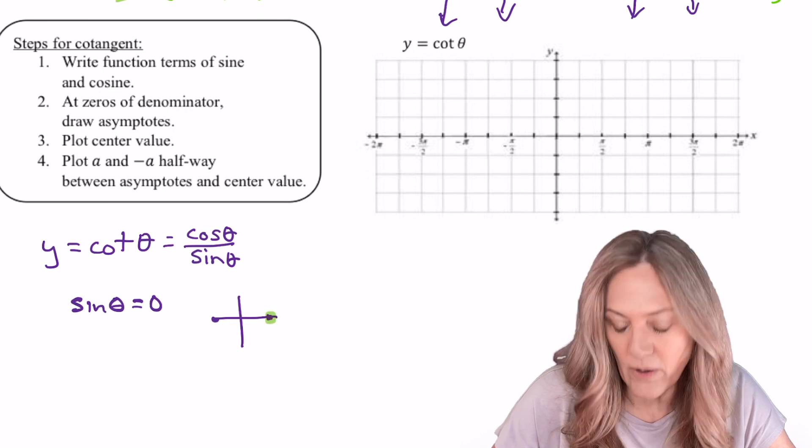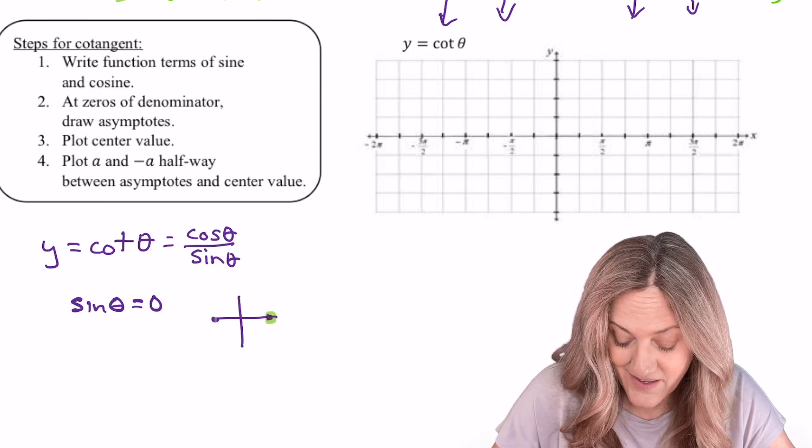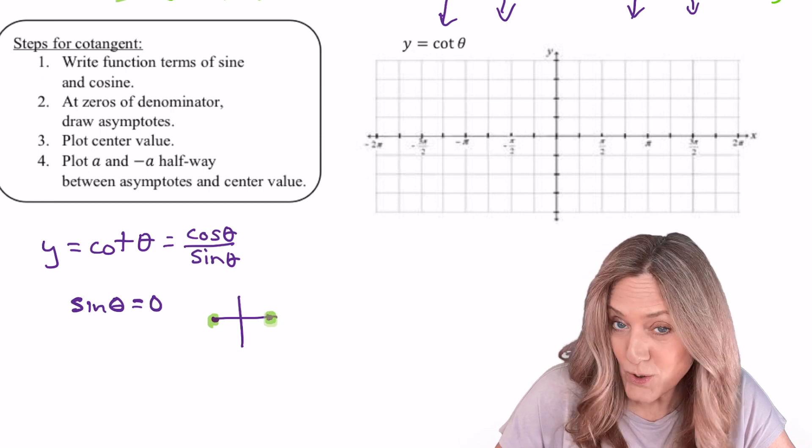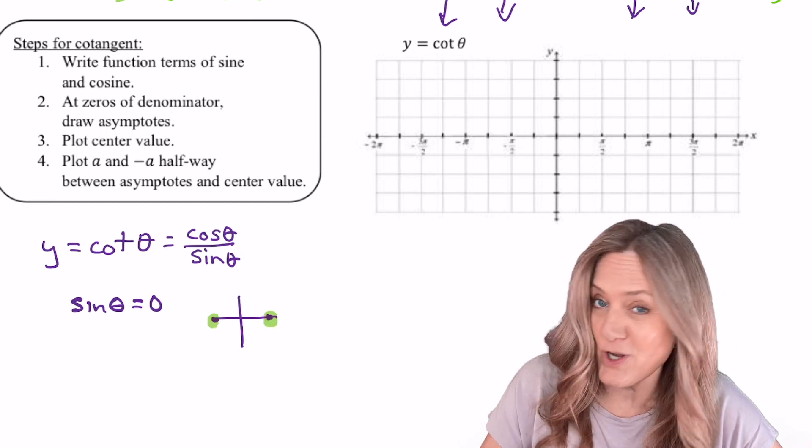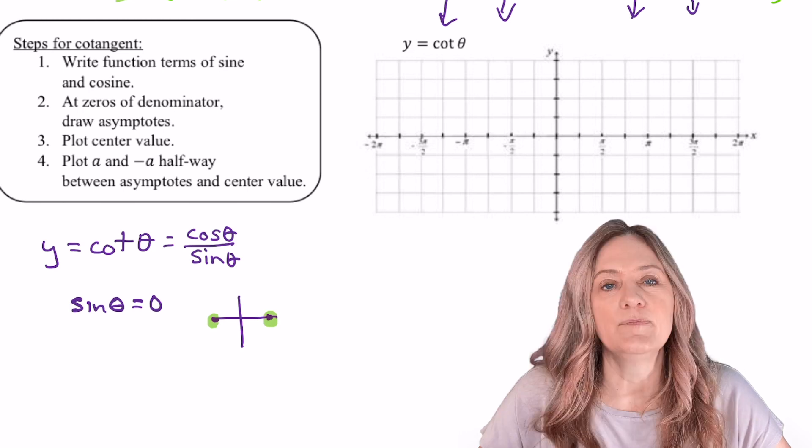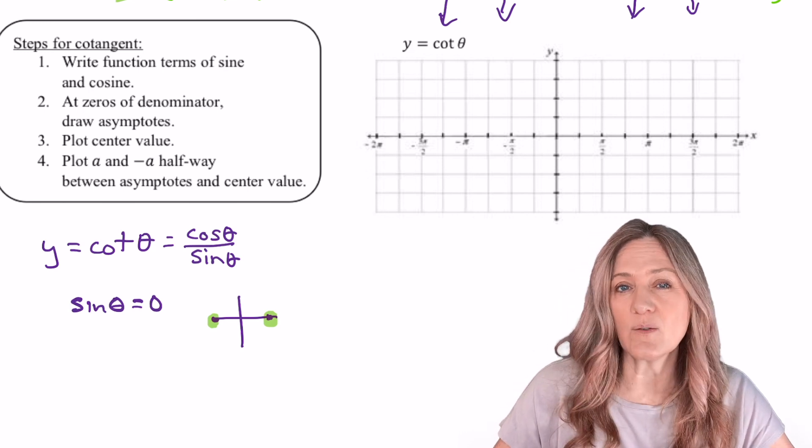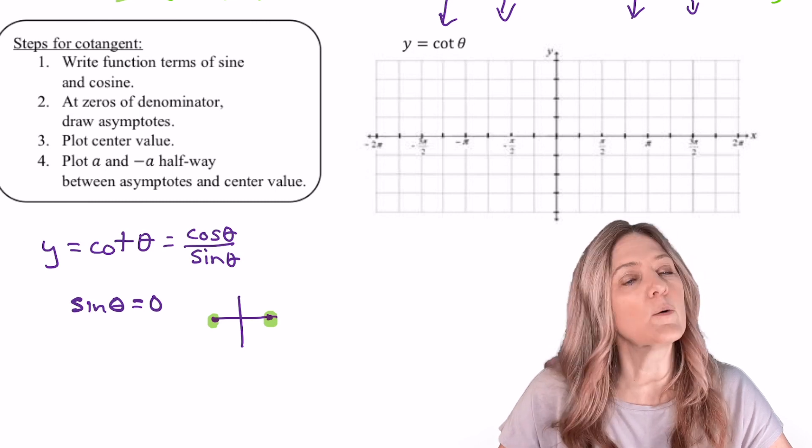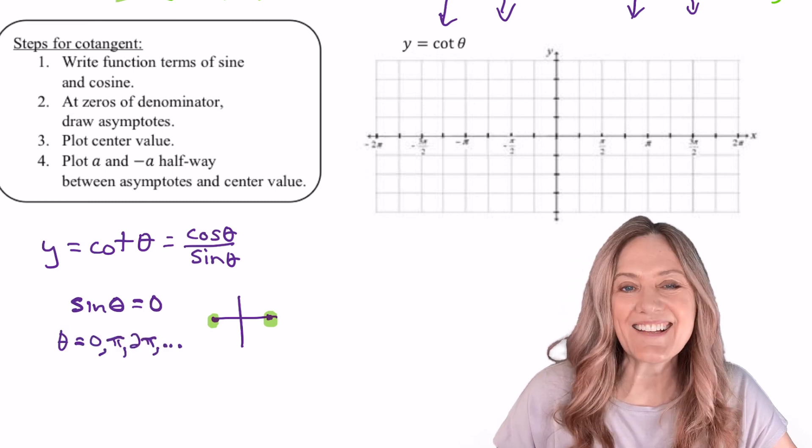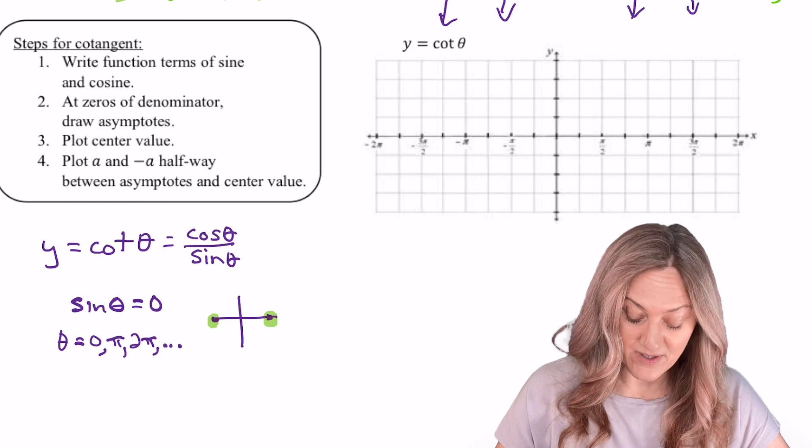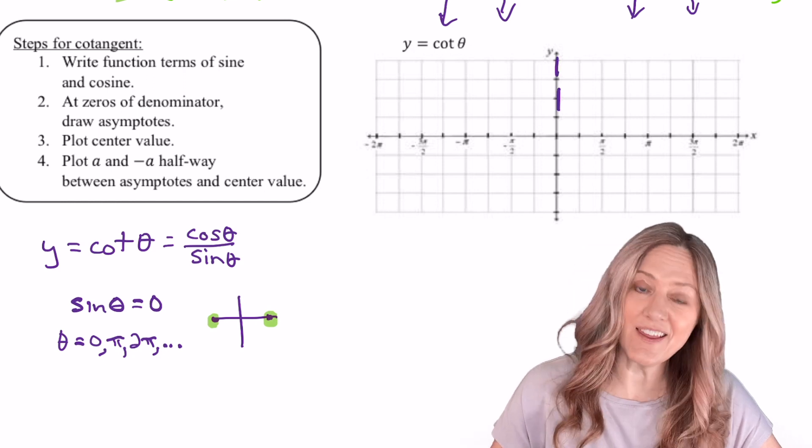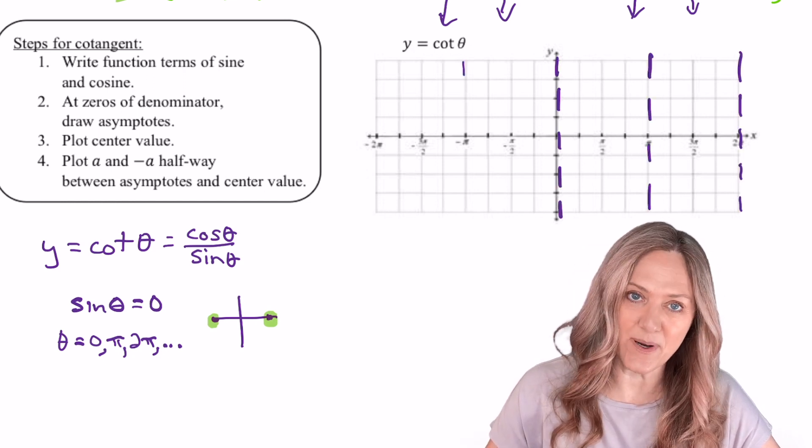Thinking of the unit circle, sine is zero at zero degrees and then π degrees and then 2π, 3π, and so on. So multiples of π. So anywhere sine equals zero, cotangent will be undefined and therefore we'll see a vertical asymptote. Let's sketch the asymptotes. Remember, 0, π, 2π in the negative direction, negative π, negative 2π.